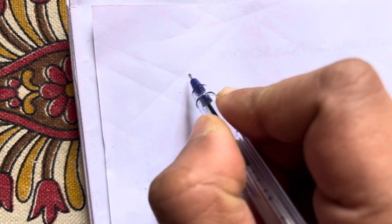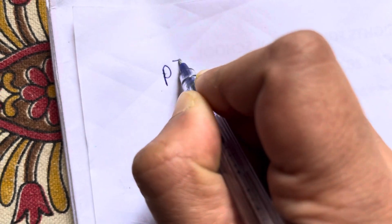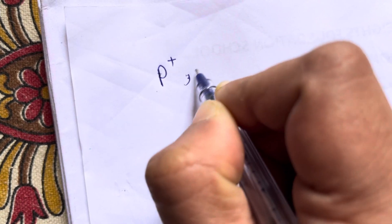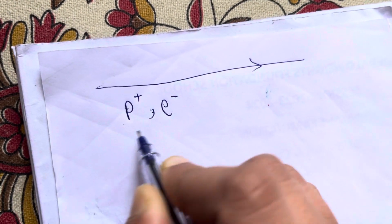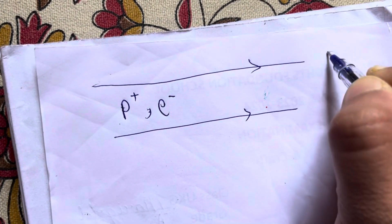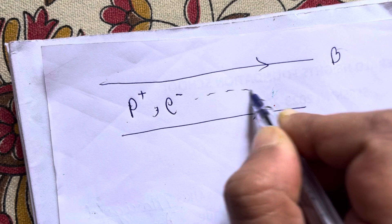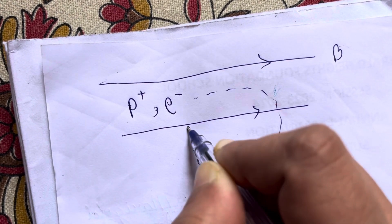Now what does circular path mean? Look, this is a proton and an electron entering a uniform magnetic field. This is a circular path.